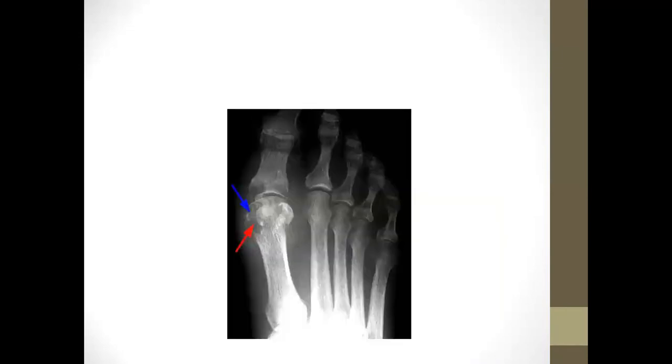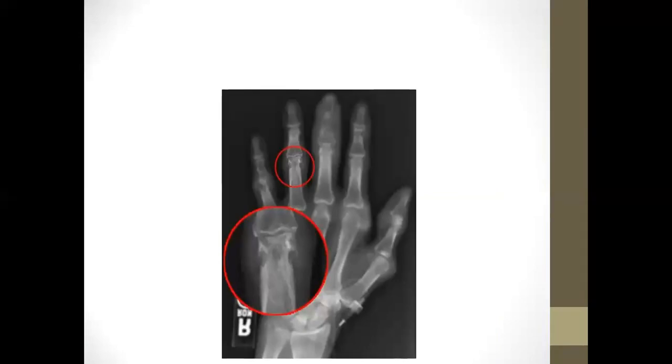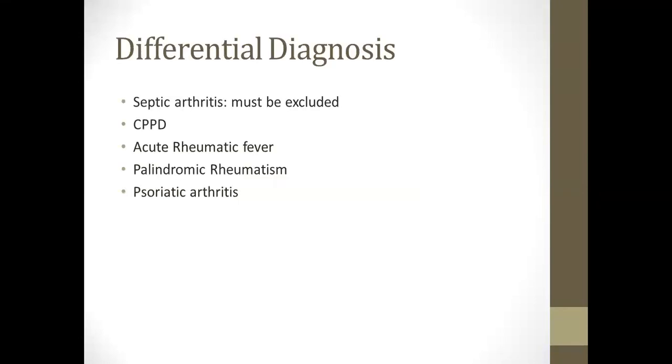When you do radiology and X-rays, you can see erosions. This is like erosions where it seems like someone has bitten out from the periarticular area—rat-bite erosions. You can see these in this picture, encircled. Rat-bite erosions in X-rays because of deposition of tophi.